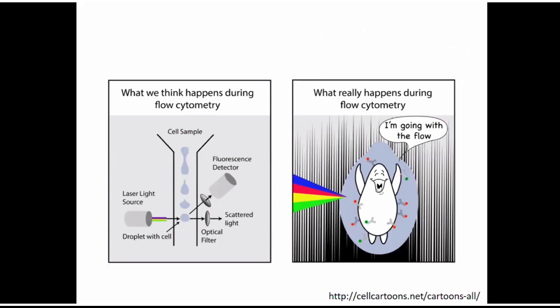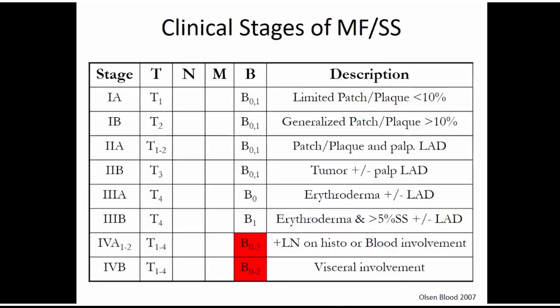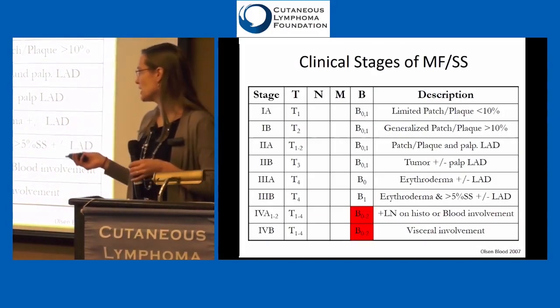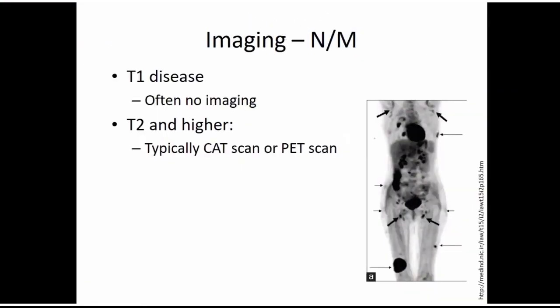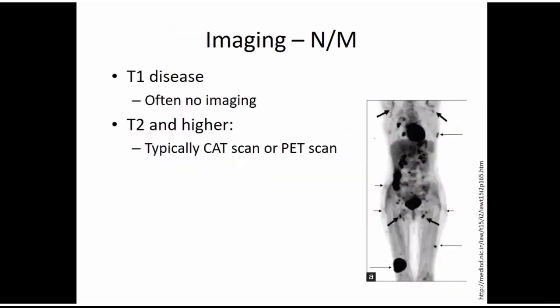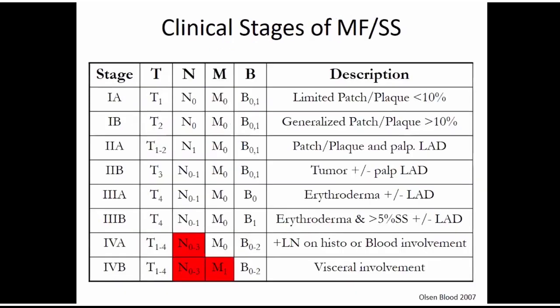Flow cytometry is actually very complicated. Early stage disease can have a little bit of blood involvement — it's really only when we get to a very high level that it changes the stage significantly. For imaging, in very early stage disease with just a few patches or plaques, we might not do any imaging. For T2 — when you have lots of patches and plaques, a tumor, or erythroderma — a CAT scan or PET scan is usually recommended. The images show areas where there's lymphoma, either in a lymph node or in a tumor in the skin. That fills in the rest of the columns so you can have the full TNMB staging.